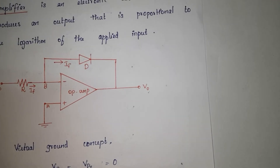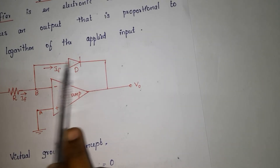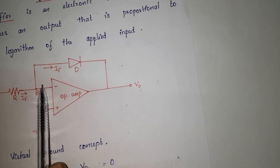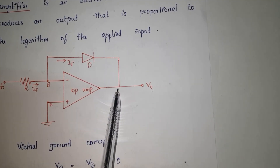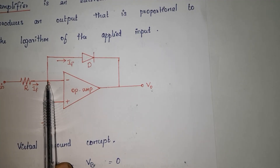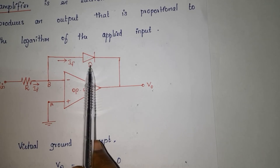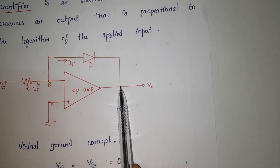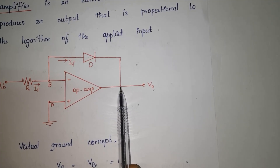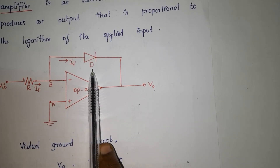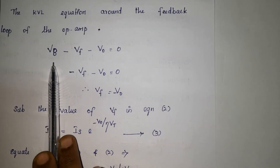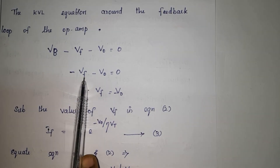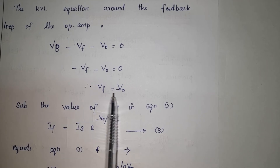Next we apply Kirchhoff's Voltage Law (KVL) around the feedback loop. The node voltage is VB, the diode voltage is VF, and the output voltage is V0. Applying KVL: VB − VF − V0 = 0. Since VB = 0, substituting gives −VF − V0 = 0, therefore VF = −V0.